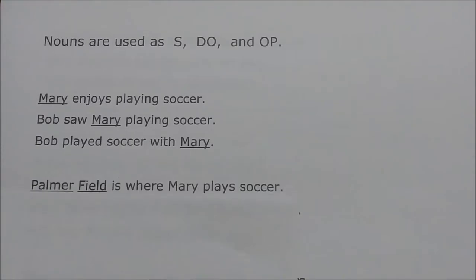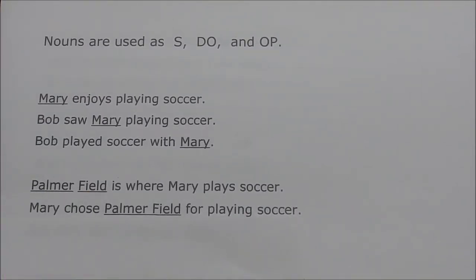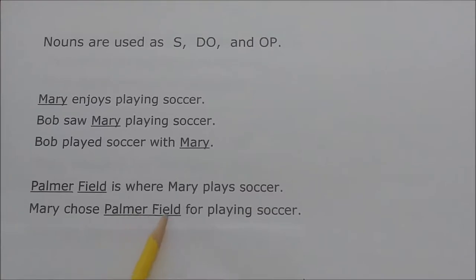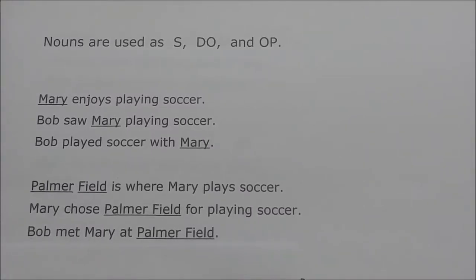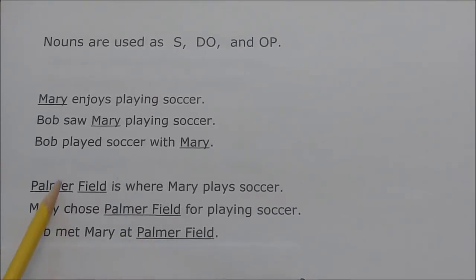Let's move on to a place. In 'Palmer Field is where Mary plays soccer,' Palmer Field is the subject. In 'Mary chose Palmer Field for playing soccer,' Palmer Field has become the direct object. And in 'Bob met Mary at Palmer Field,' Palmer Field is the object of the preposition 'at' — a prepositional phrase. So again, the same noun being used in different functions, which is very common in English.